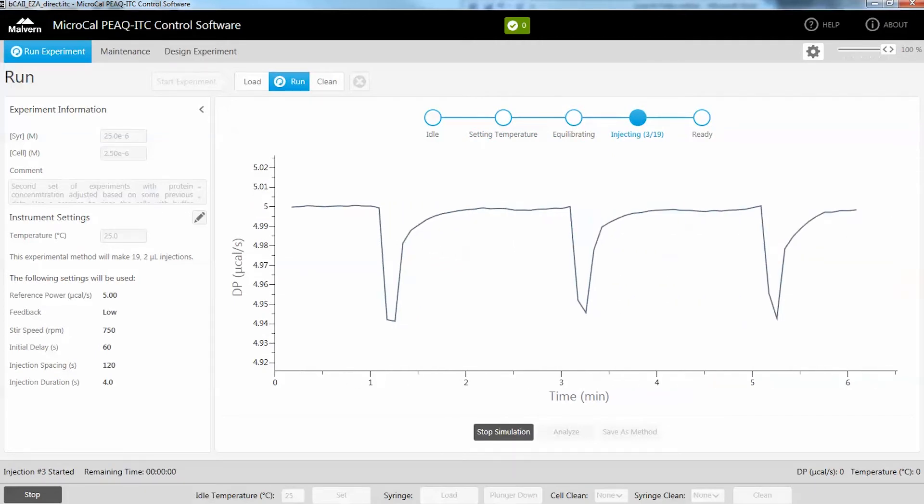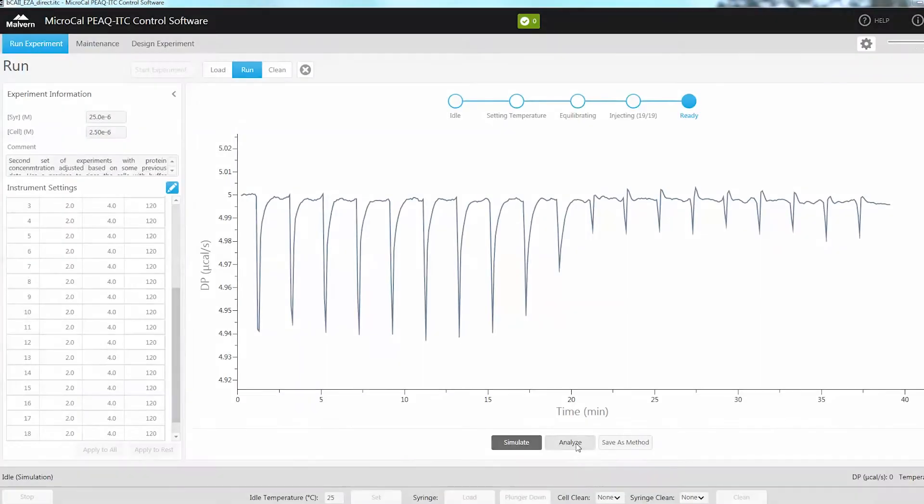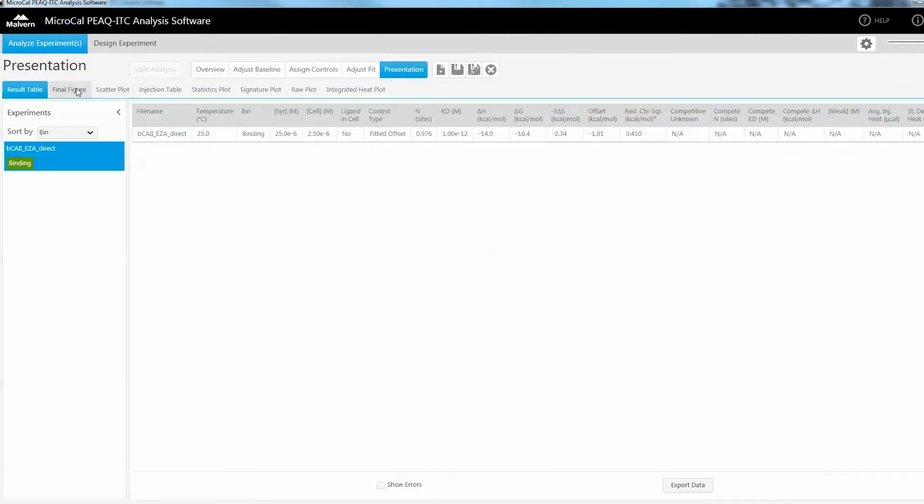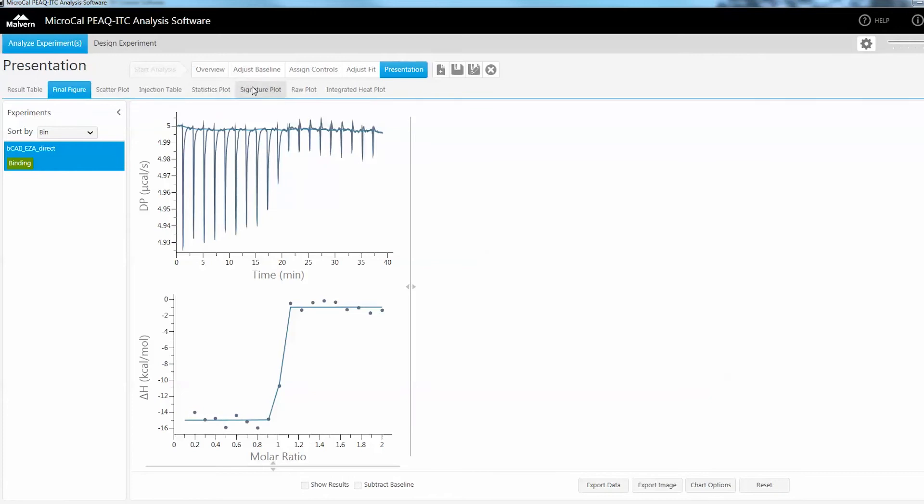At the conclusion of your experimental run, simply click Analyze, and the MicroCal PEAQ ITC analysis software will open and automatically generate fitting results in a range of graphical outputs.